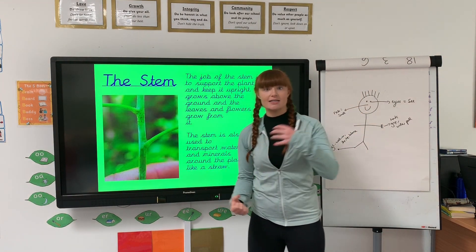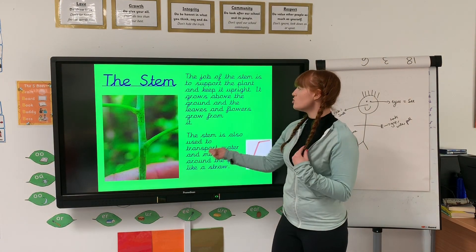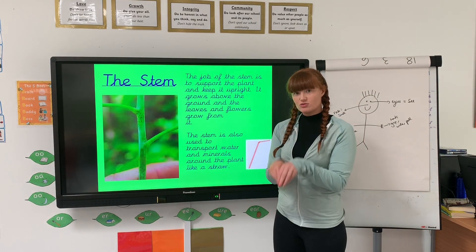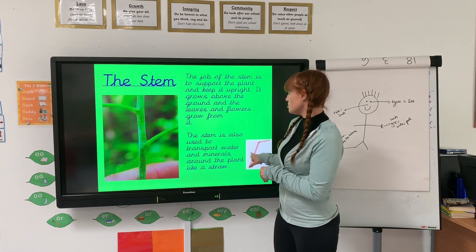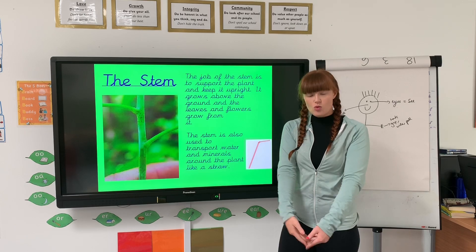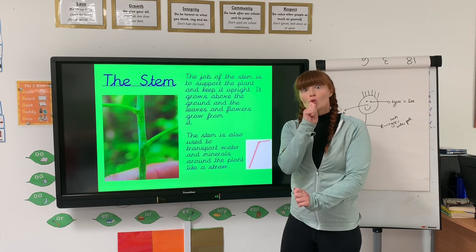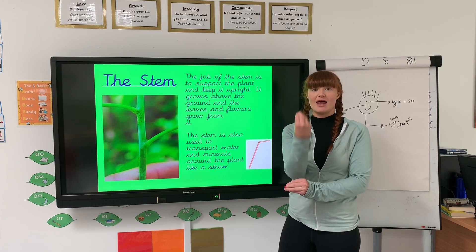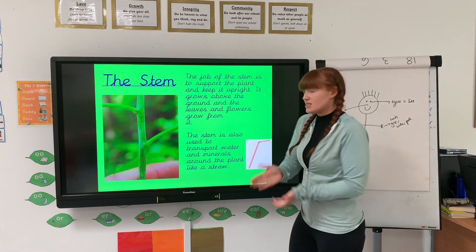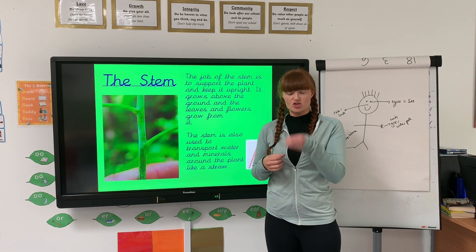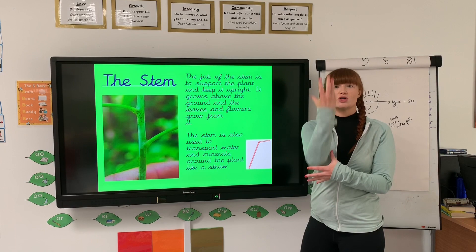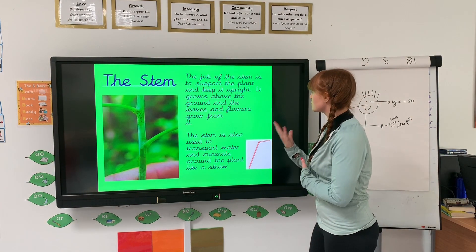The leaves and the flowers grow from the stem. The stem is also like a straw — because from the roots absorbing those minerals and water, the stem sucks them up, like a straw, to allow that flower to blossom and so that the plant gets all the minerals and water that it needs. So imagine you're drinking lemonade through a straw — sucking up all those minerals and all that water — and it keeps the plant nice and straight.